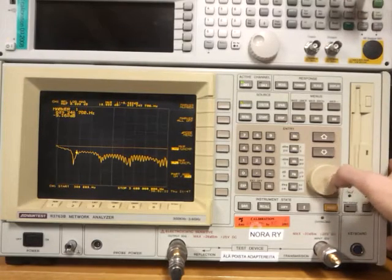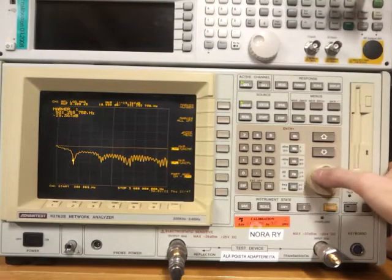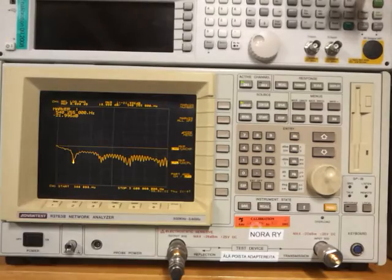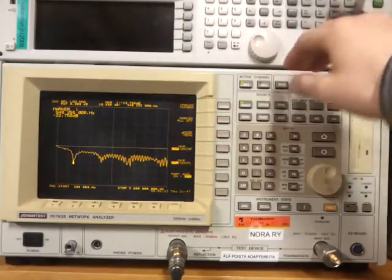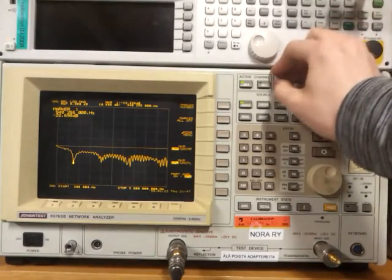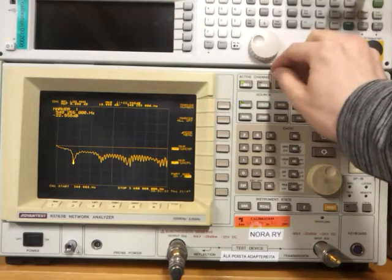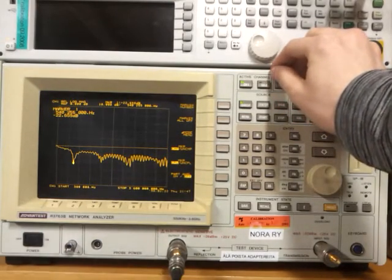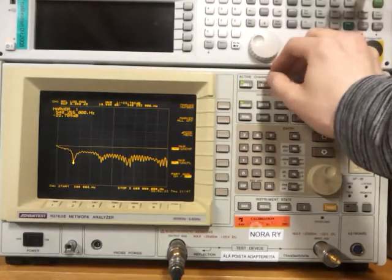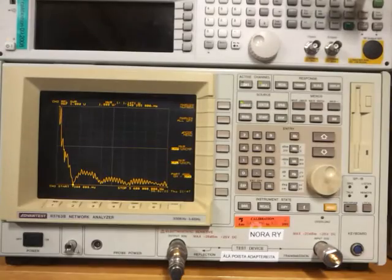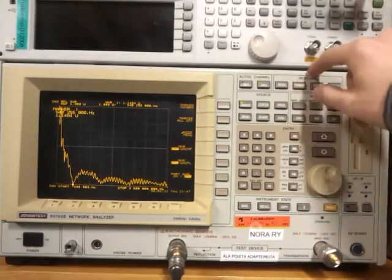But we have the first resonance with a dip of minus 22 dB at 540 MHz, and it's smack in the middle of the UHF DVB-T band, so it should work somewhat where it's supposed to. And the VSWR there is a glorious 1.1.